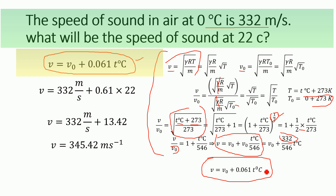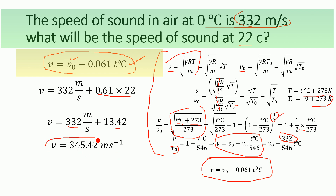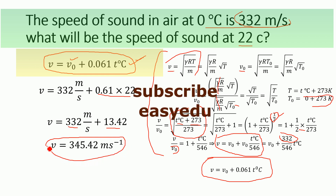Substituting these values, the final equation is v equals v-naught plus 0.061 times t in degrees centigrade. With temperature t equal to 22 degrees centigrade and v-naught equal to 332 meters per second, multiplying 0.061 by 22 gives 13.42. Adding 13.42 to 332, we get the velocity equal to 345.42 meters per second. This is the required answer — the velocity of sound in air at 22 degrees centigrade.